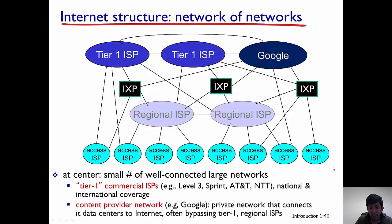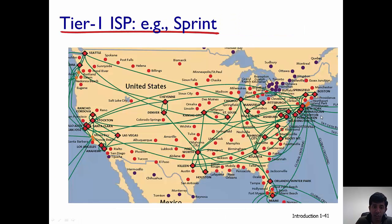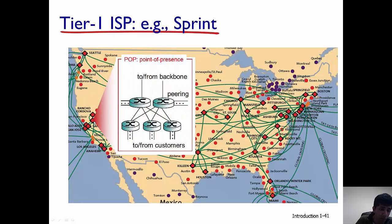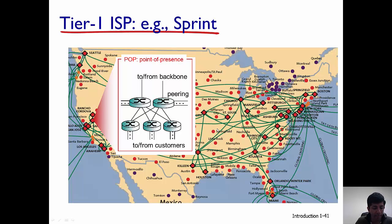The entire structure of the internet in a very abstract manner is represented by this graph. As a final example, here is a high-level picture of a tier-1 ISP — Sprint — showing an actual map of its network. If we zoom in on one of these points of presence, you can see that there are many peering agreements and many routers. With this I'll end this lecture. Thank you.